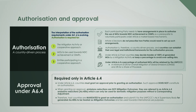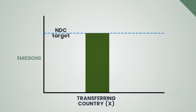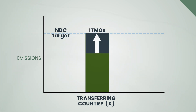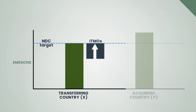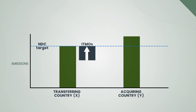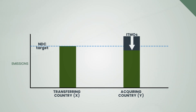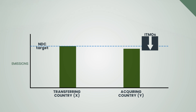Furthermore, authorization mandates participating parties to apply corresponding adjustments. Corresponding adjustments are another key concept under Article 6 operationalization. They are an emissions balance, ensuring that ITMOs or authorized Article 6.4 emission reductions are not double counted. These adjustments are made in participating parties' national inventory reports.